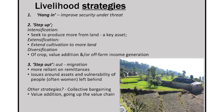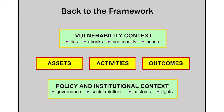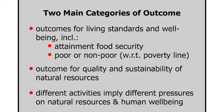We come back to the framework and go to the next point: outcomes. There are two main categories. First, the outcomes for us as individuals — for our standards of living and wellbeing. This includes the attainment of food security, moving out of poverty, improving health and educational status. The second is about the sustainability of natural resources themselves. These different activities imply different kinds of pressures on both natural resources and on human beings and our own wellbeing.